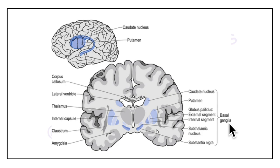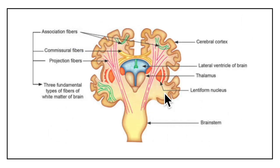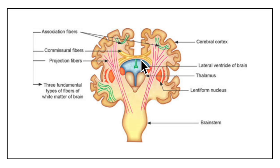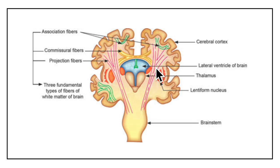We will be learning about basal ganglia in detail in the coming videos. Now this is another diagram showing the coronal section of the brain. This is the right hemisphere and this is the left hemisphere of the brain. There is free flow of information in the central nervous system — between the hemispheres through commissural fibers, between various parts of one hemisphere through association fibers shown in green, and between the upper and lower parts of the brain through the projection fibers shown in pink.